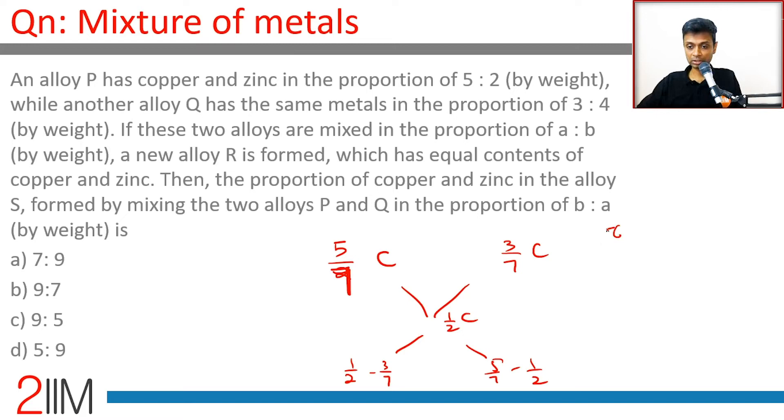So 1/2 minus 3/7, this is 7/14 minus 6/14 which is 1/14. 5/7 minus 1/2 is 10/14 minus 7/14 which is 3/14. These two should be mixed in the ratio 1/14:3/14 or 1:3. So a:b is 1:3.